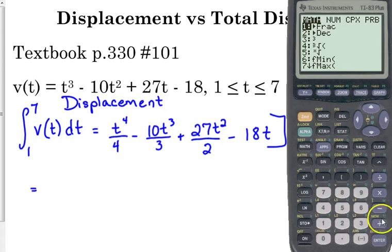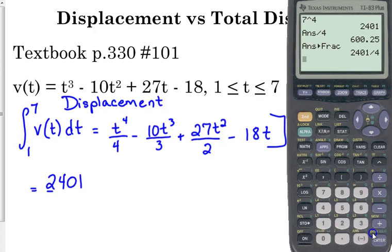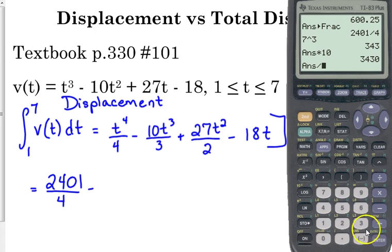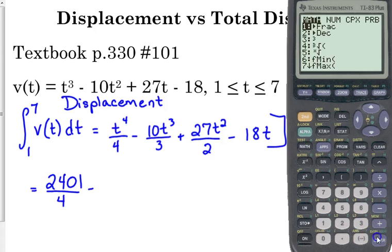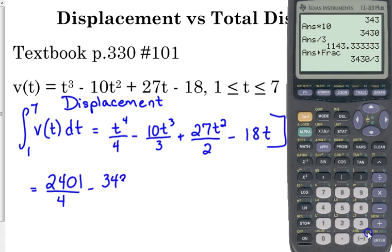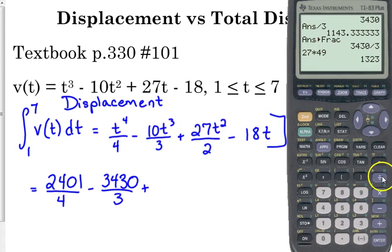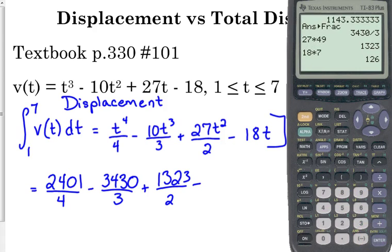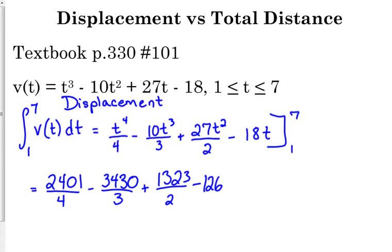And then, guess what? That's not evenly divisible and it does not reduce. 7 cubed times 10, divided by 3. 27 times 49. 126. That's just pretty hard.